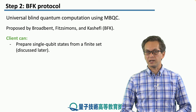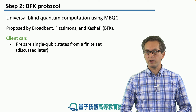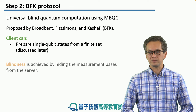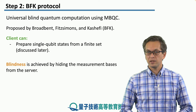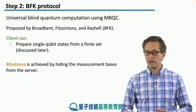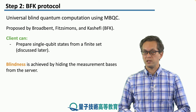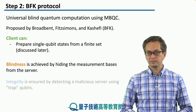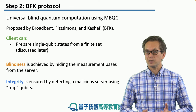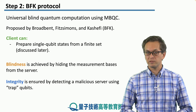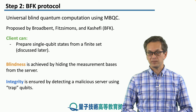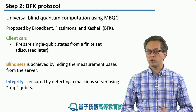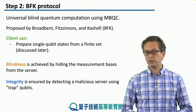In this scenario, the client has the capability of preparing single qubit states from a finite set, which we will discuss later. The protocol achieves blindness — that means the client can hide the input, the computation, as well as the output — and it's achieved by hiding the measurement basis from the server. It can also lead to verification of the server or ensure integrity of the data, and that's by placing certain trapped qubits in the computation, which can then reveal a malicious server.